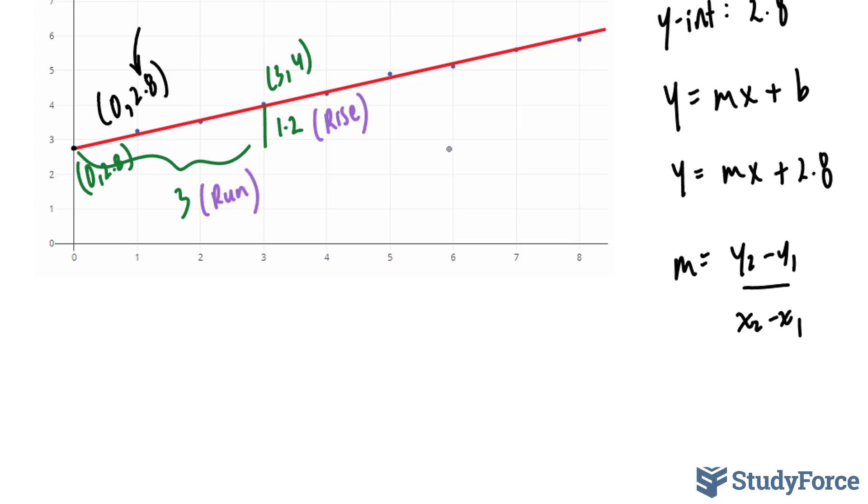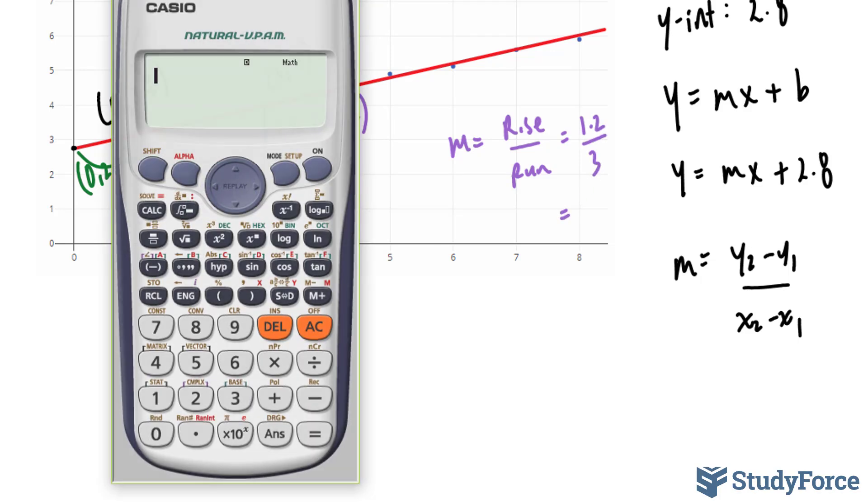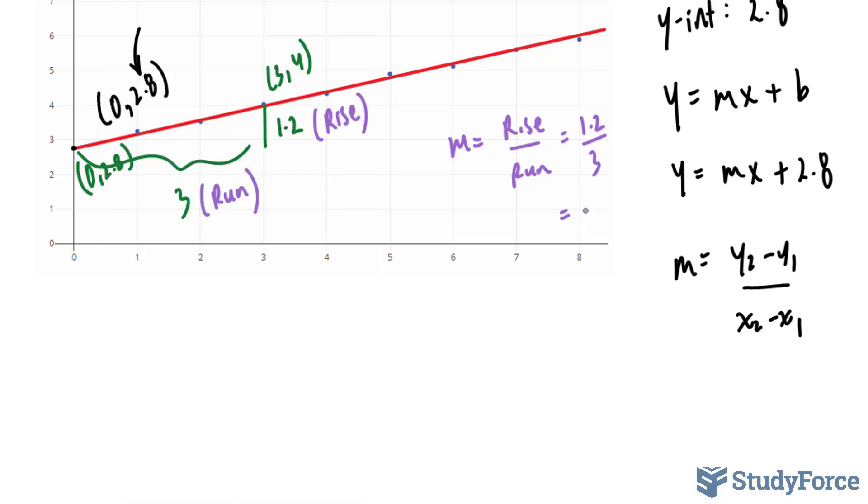Using the formula rise over run, where m equals rise over run, we get 1.2 over 3. Using our calculator, 1.2 divided by 3 is 0.4.